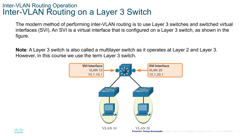The most modern method for inter-VLAN routing is the use of layer 3 switches. Layer 3 switches and switch virtual interfaces (SVIs) are used to perform this task. An SVI is a virtual interface configured on a layer 3 switch that facilitates inter-VLAN routing. A layer 3 switch is also called a multi-layer switch as it operates at both layer 2 and layer 3. However, in this course we will always use the term layer 3 switch.